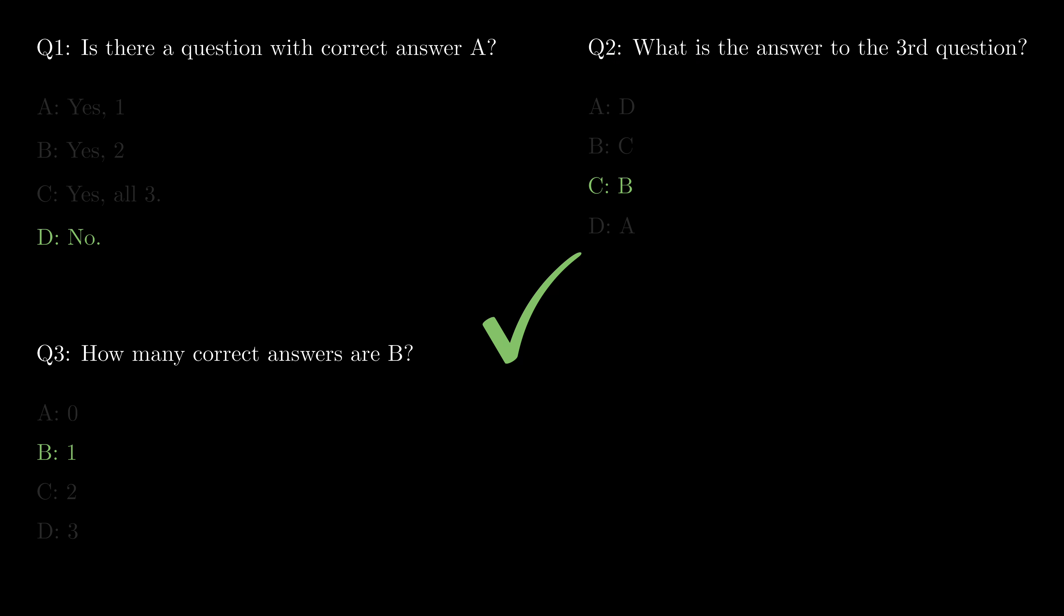We can check the last combination. If question two is D, then question three must be A. You can verify that whether we choose A or B for question one, we will have a contradiction, therefore no.